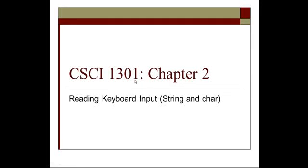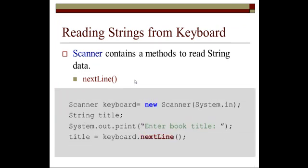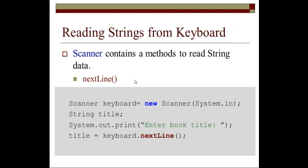In this presentation we're going to look at reading strings and char. The Scanner class contains a method to read a string from data — the method is called nextLine. After declaring a Scanner object named keyboard, you can read in a string and store it in a string variable called title: title equals keyboard dot nextLine. That's an example of how to use the nextLine method.